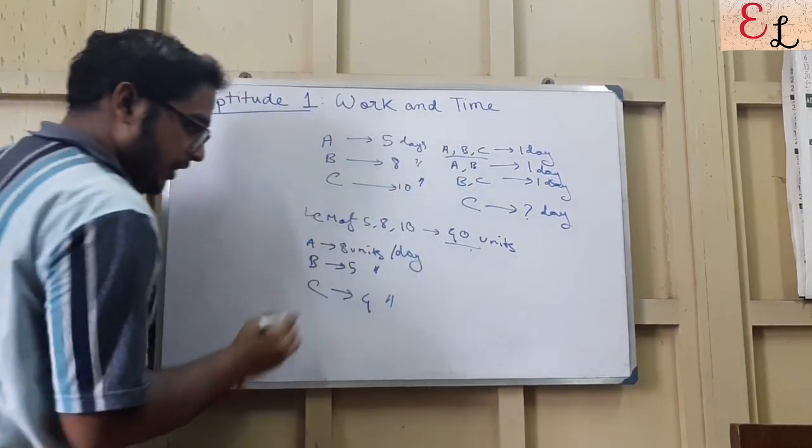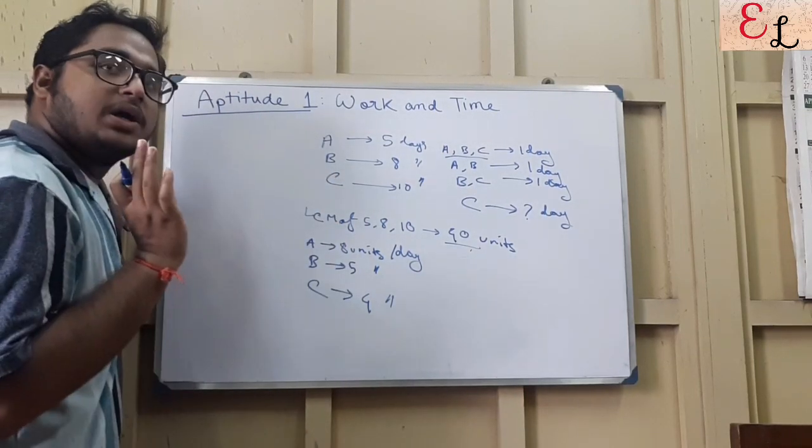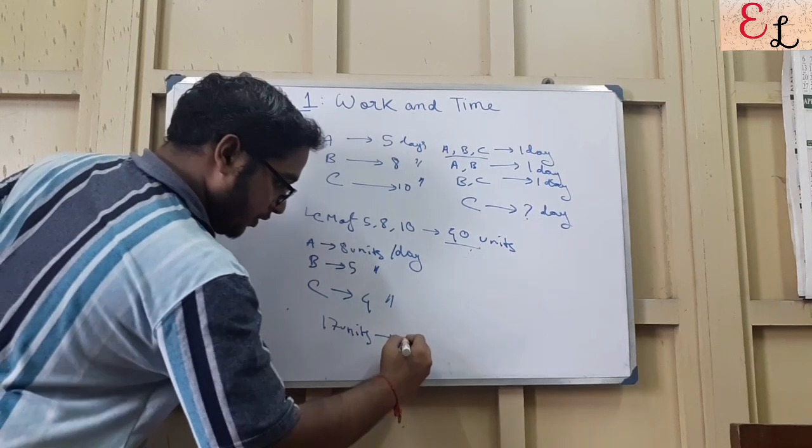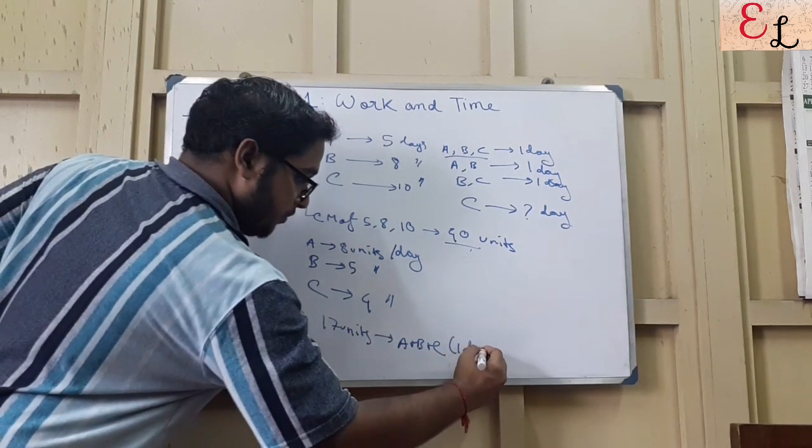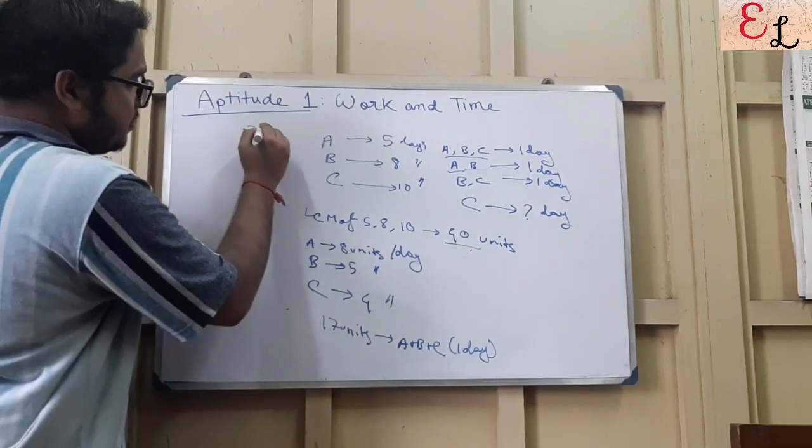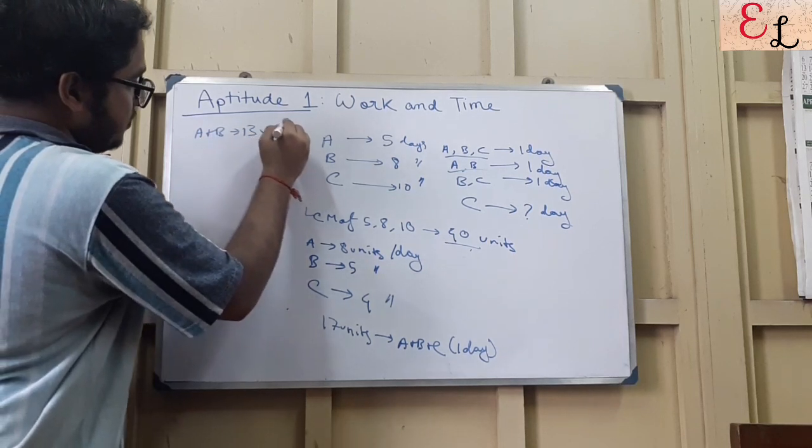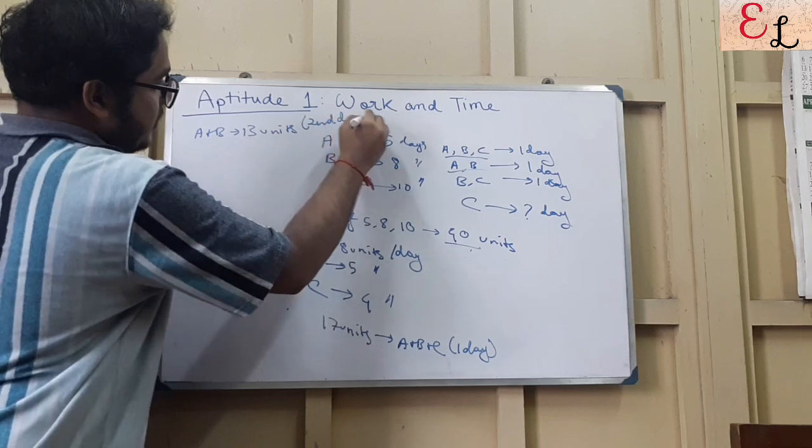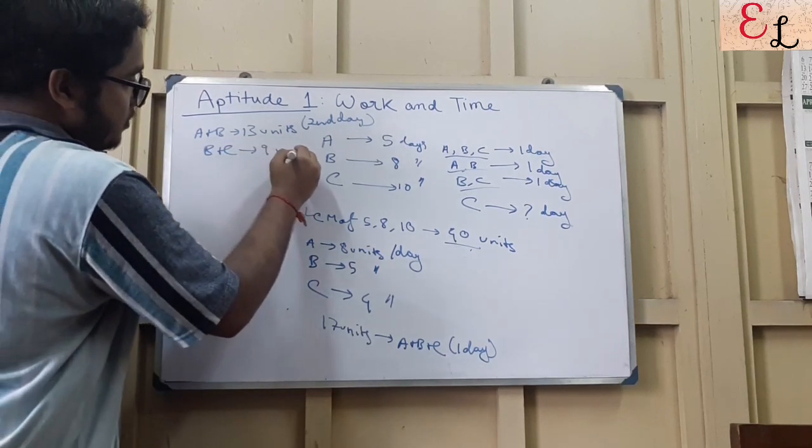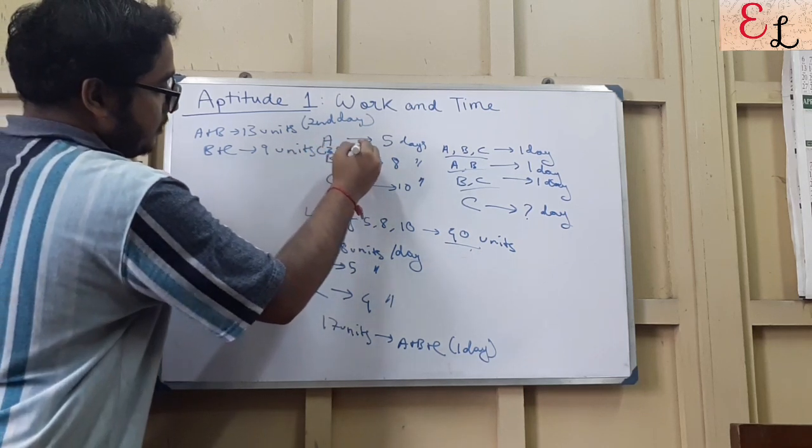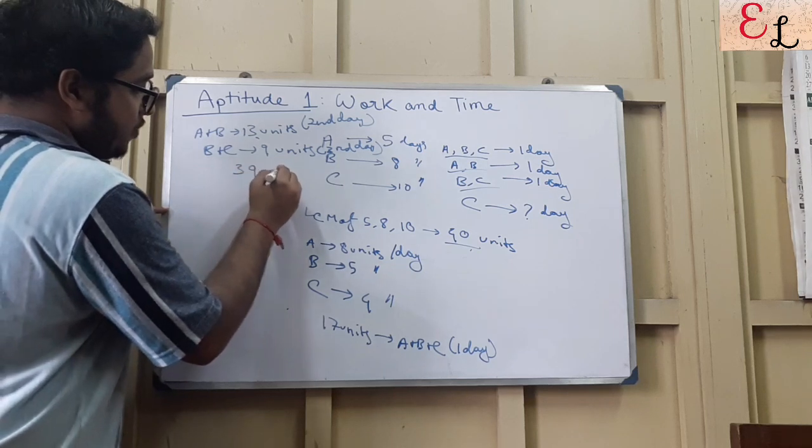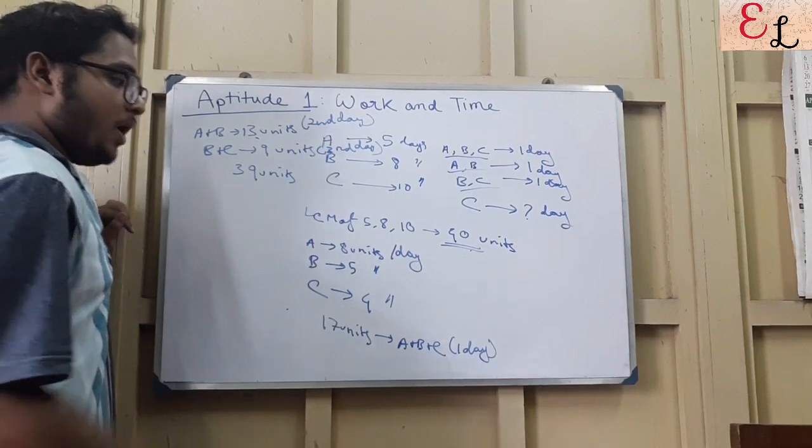Now, A, B, C work together for 1 day. How many units of work do they do? 8 plus 5 plus 4, that is 17 units in the first day. A plus B plus C does 17 units in 1 day. Thereafter, A plus B works, that is 5 plus 8, 13 units on the second day. Coming to the third day, B and C work, that is 5 plus 4, 9 units of work are being done in the third day. So 13 plus 9 plus 17 gives 39 units of work done. Remaining 1 unit of work, 1 unit work remaining.